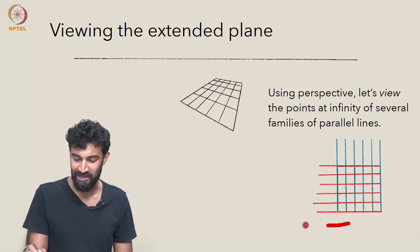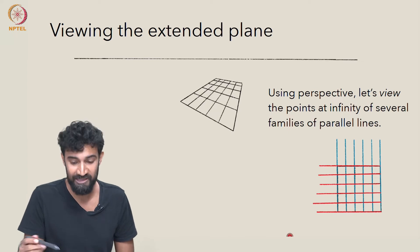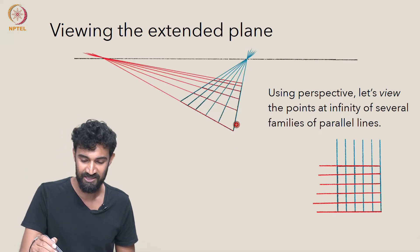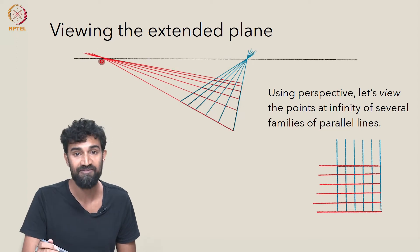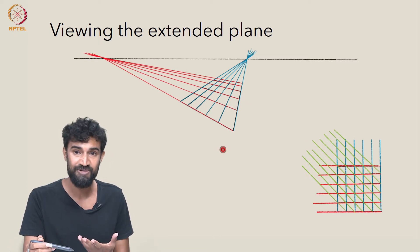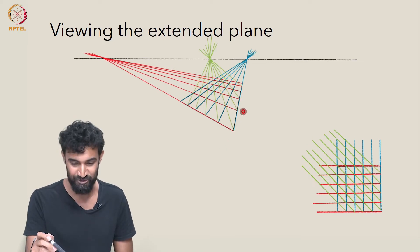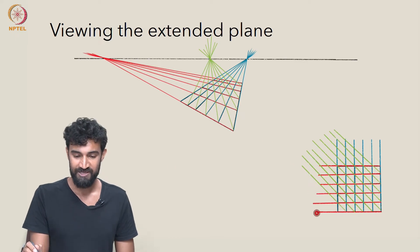Here are two families of parallel lines in R2: the blue vertical lines and the red horizontal lines. How do those look in a perspective view? We can see very clearly that the blue lines all meet at a point at infinity here, and the red lines all meet at a point at infinity over there. Here's another family — the green diagonal lines — and if we draw them in perspective, they all meet at a point at infinity over here. So we can see yet another point of our extended plane very clearly.